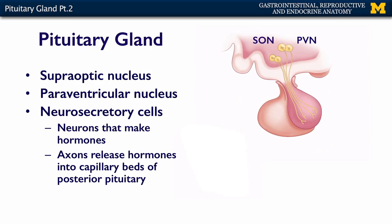The SON and PVN are made up of neuroendocrine cells, or neurosecretory cells — really special neurons. They look like neurons and act like neurons to a large degree, but instead of synapsing with another neuron, their axon terminals here in the posterior pituitary release hormones. The two hormones they release are oxytocin and vasopressin.